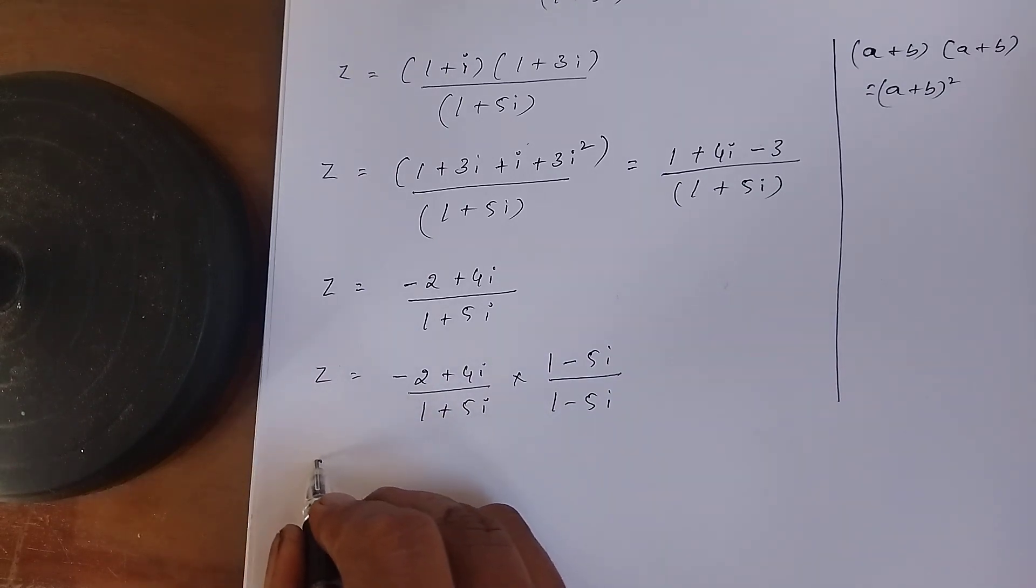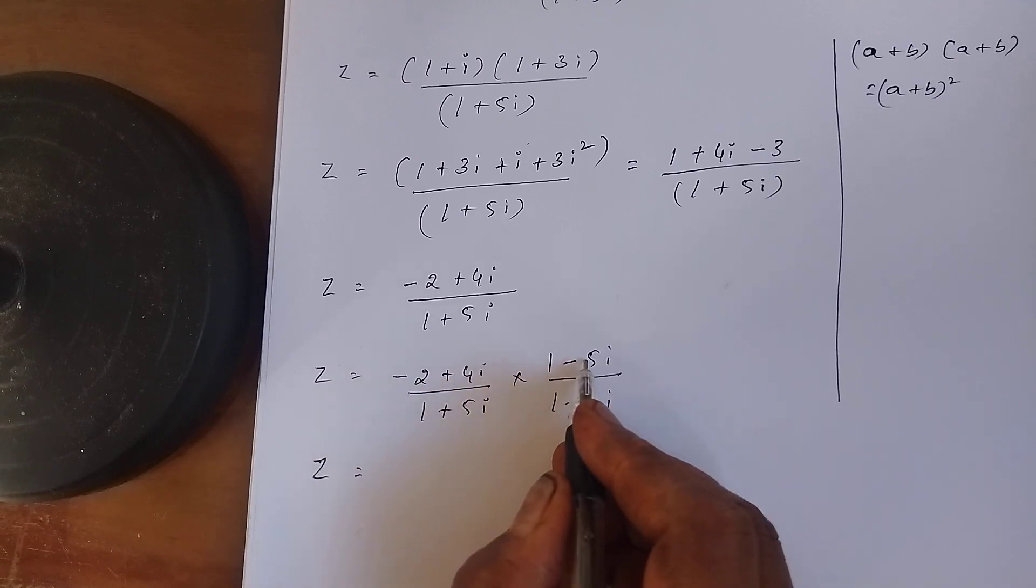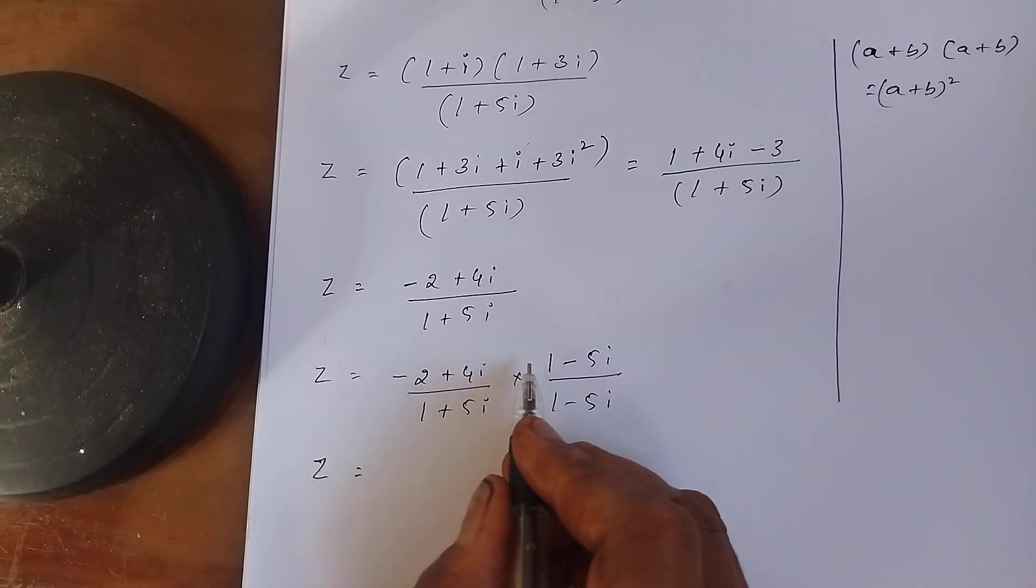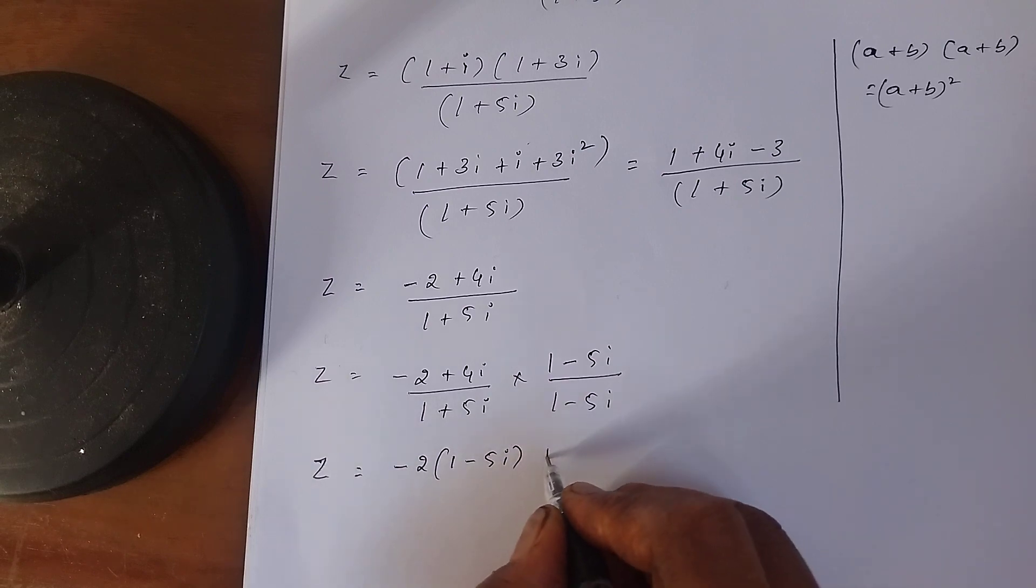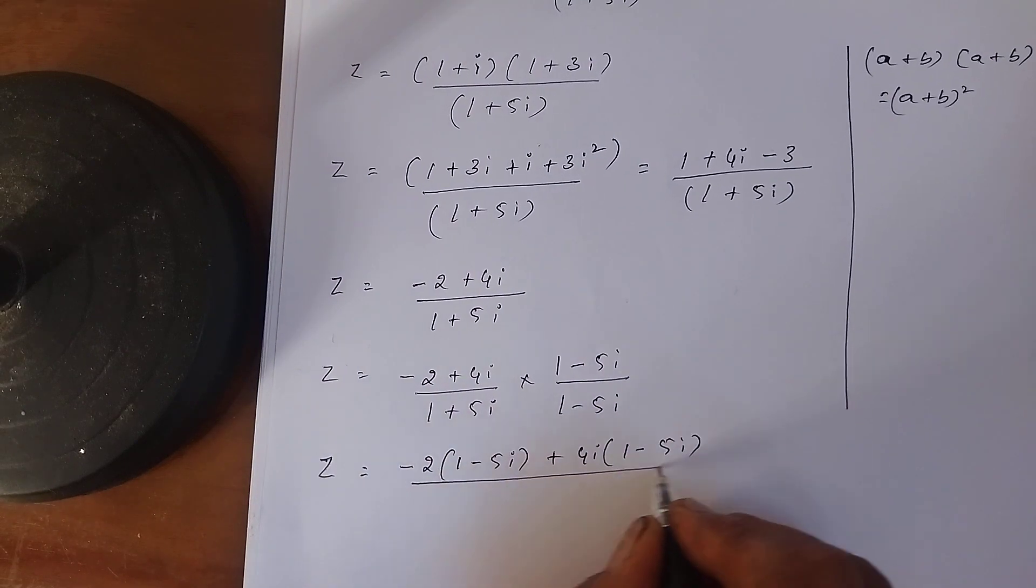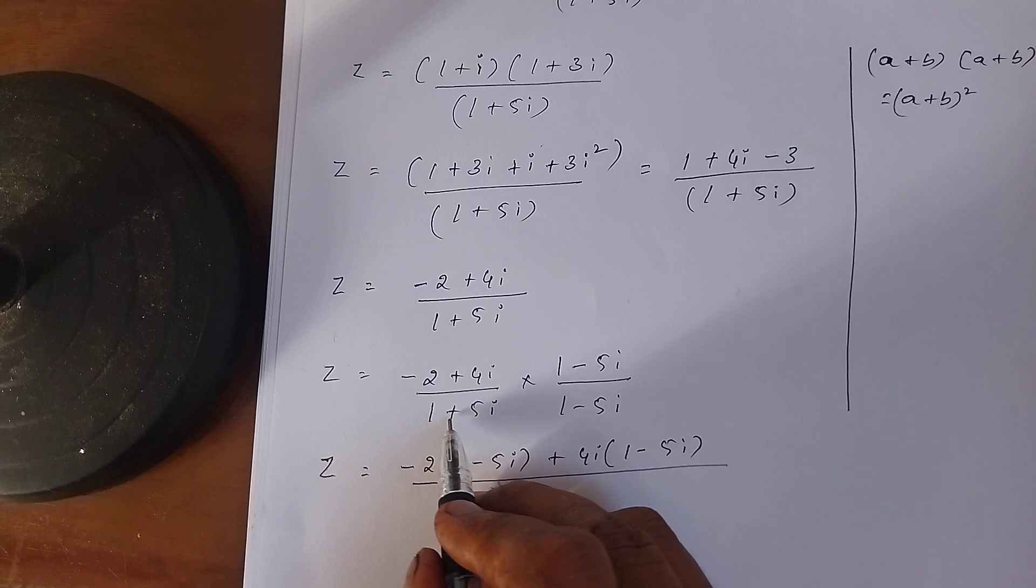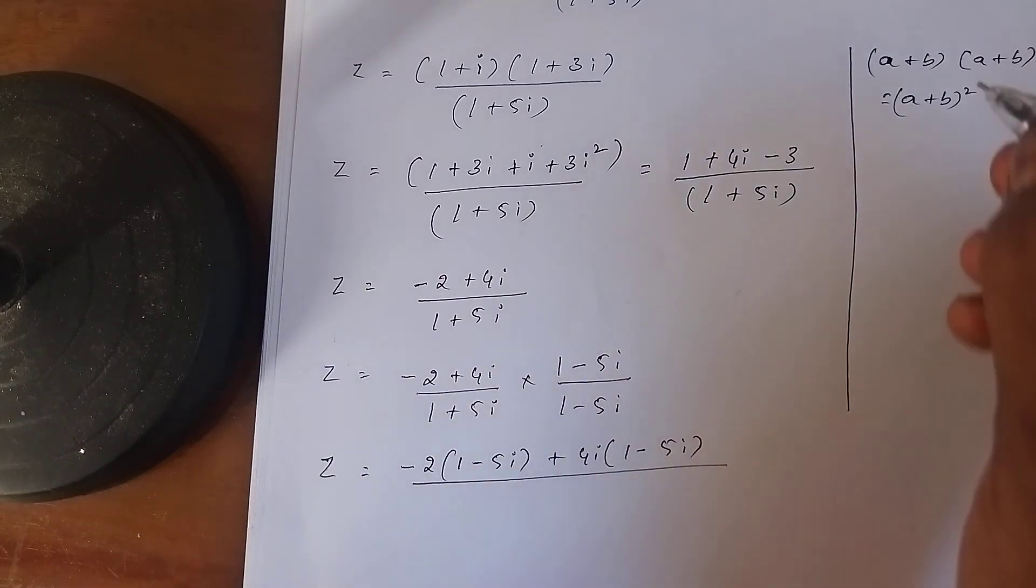Multiplying. Here the signs are different, so what we will do? First you multiply like this: -2 into (1-5i) plus 4i into (1-5i) divided by... You have this formula A+B into A-B is A²-B².